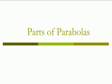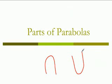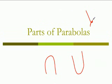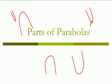In this video, we're going to talk about the parts of a parabola. In the last lesson, you learned that a parabola is the shape of the graph of a quadratic equation. Parabolas are those U-shaped graphs that you see from quadratic equations. They can be fat, they can be skinny, they can be all kinds of shapes — but those are all parabolas.